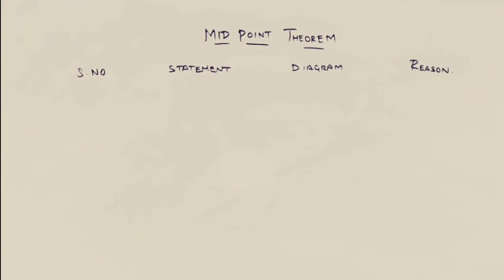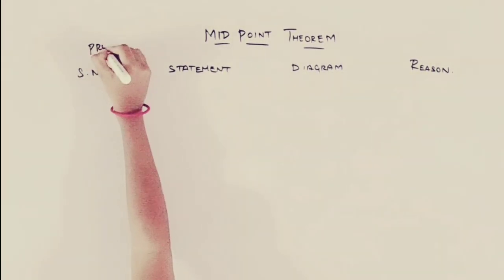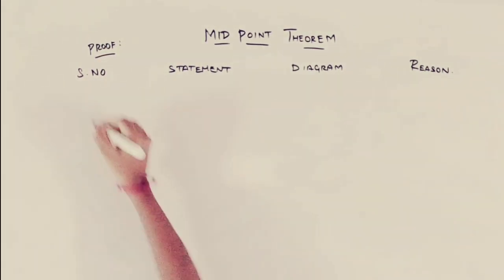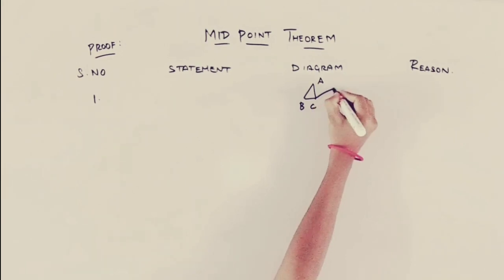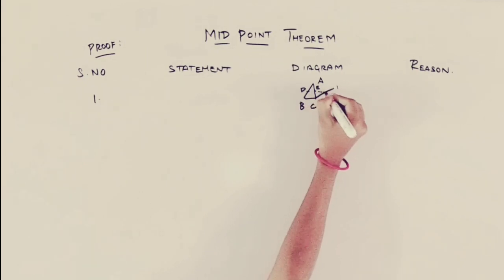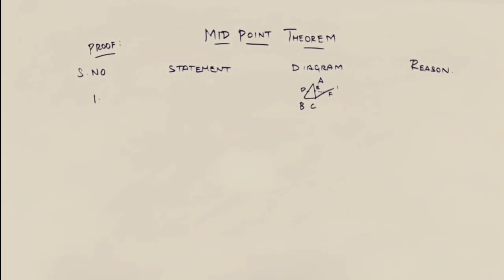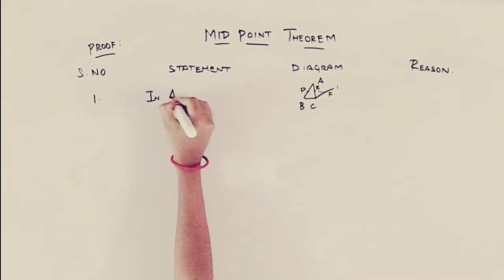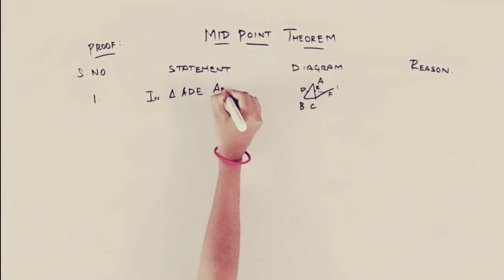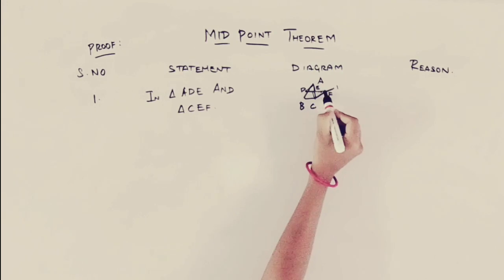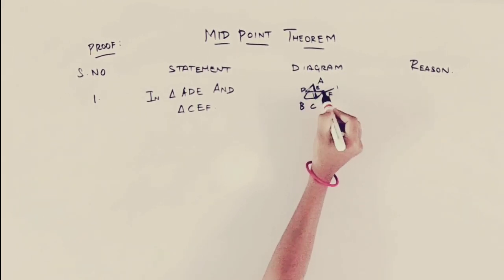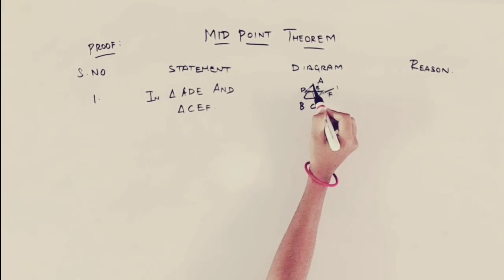Now let's look at the proof. In the diagram with triangle ABC, we extend DE to F. Consider triangle ADE and triangle CEF. In these two triangles, E is the midpoint of AC, so AE equals CE. That is the first reason — the side AE equals CE.